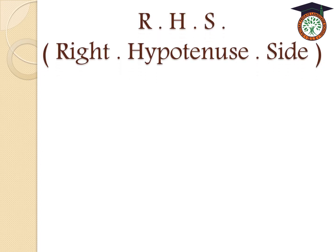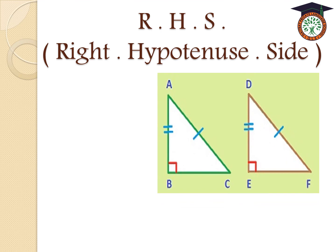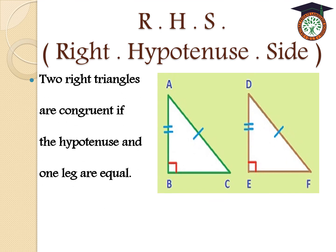The fourth case is RHS — Right angle, Hypotenuse, Side. This case applies to right-angled triangles. If we have two right triangles, they are congruent when the hypotenuse and one leg are equal.